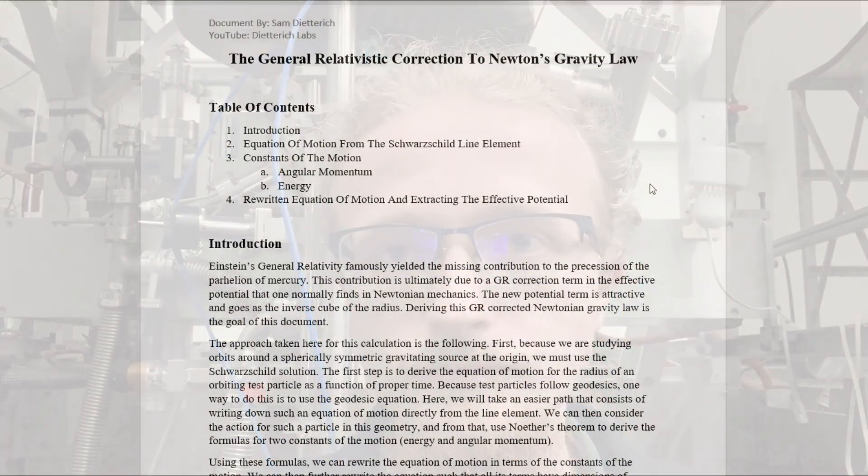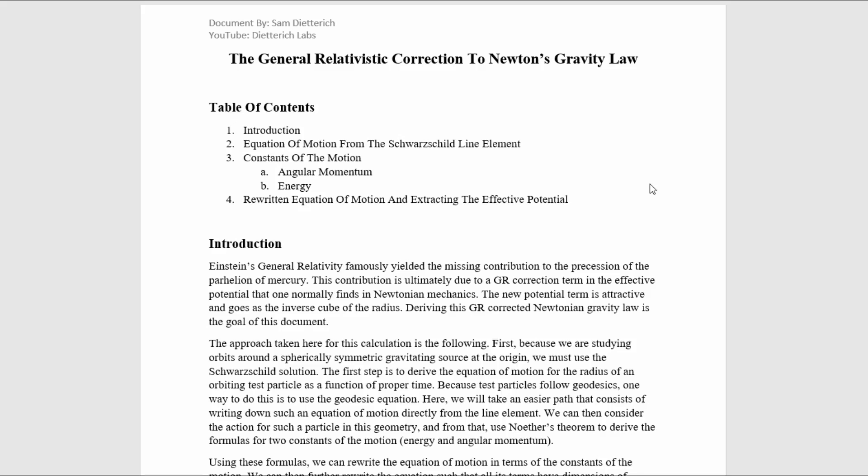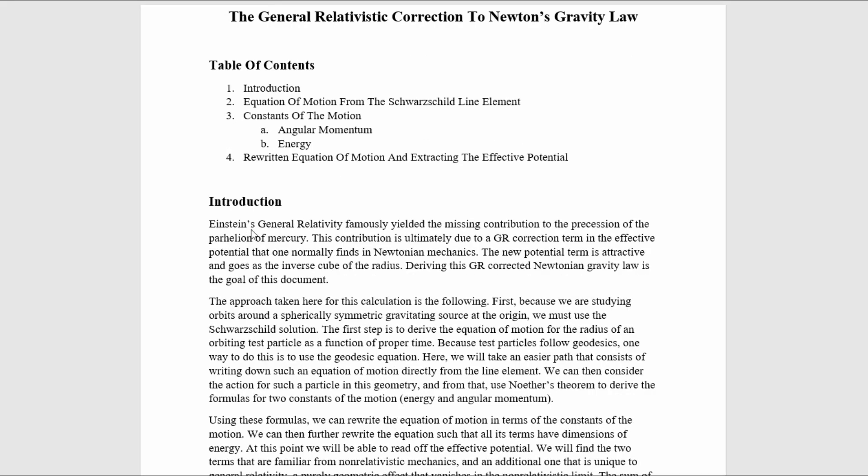Let's get started with this calculation of the General Relativistic Corrected Newton's Gravity Law. Einstein's General Relativity famously yielded the missing contribution to the precession of the perihelion of Mercury.